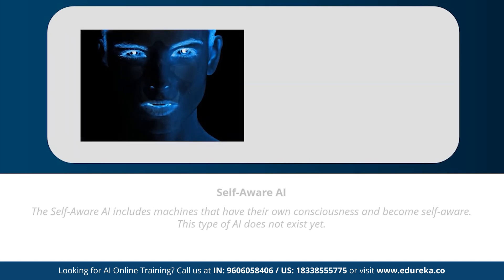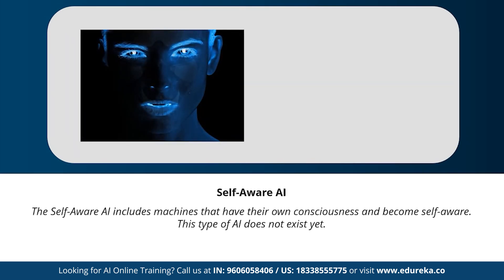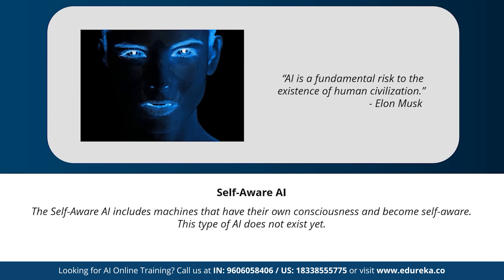Moving on to our last type is self-aware artificial intelligence. Let's hope we don't reach the state of AI where machines have their own consciousness and become self-aware. This type of AI is a little far-fetched, but in the future, achieving a stage of super intelligence might be possible. Geniuses like Elon Musk and Stephen Hawking have constantly warned us about the evolution of AI. Let me know your thoughts in the comments — do you think we'll ever reach the stage of artificial super intelligence?